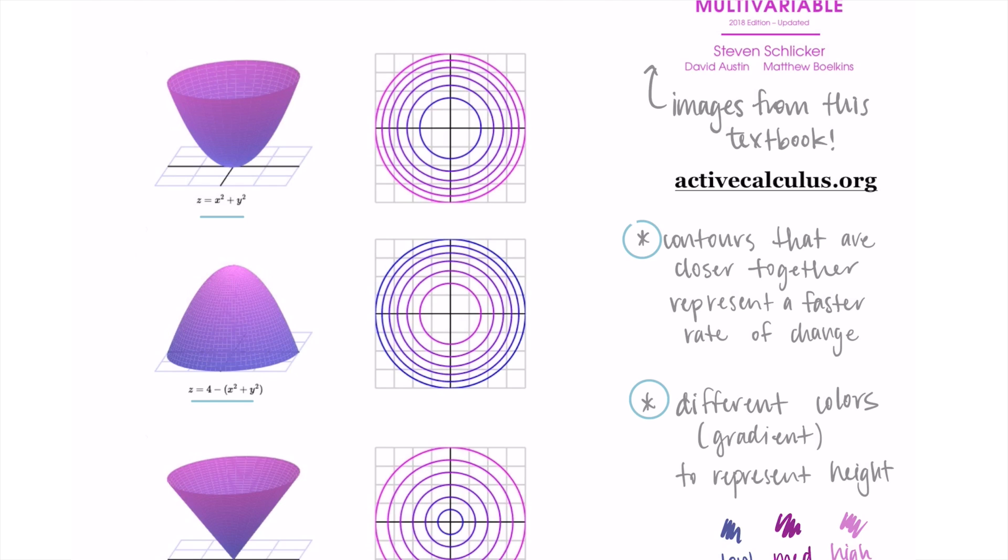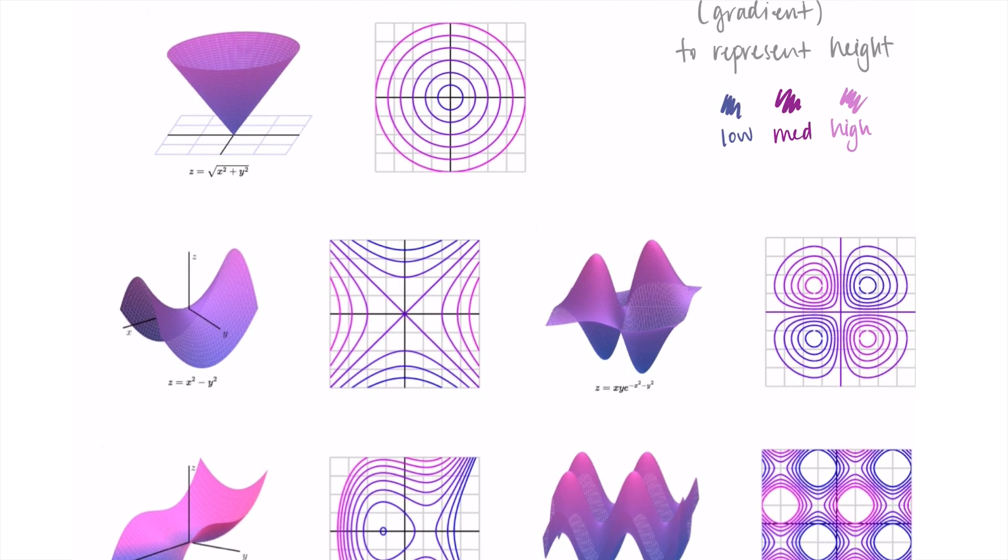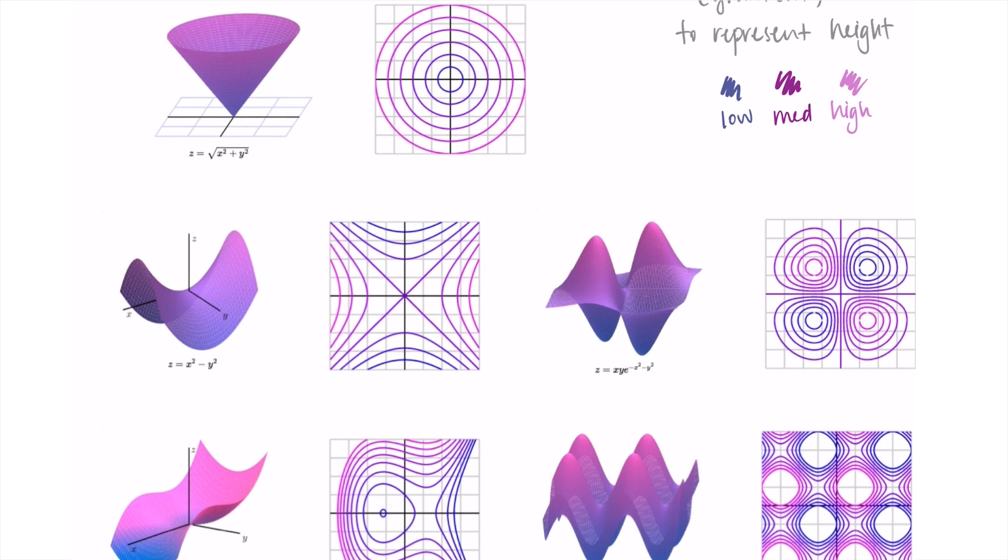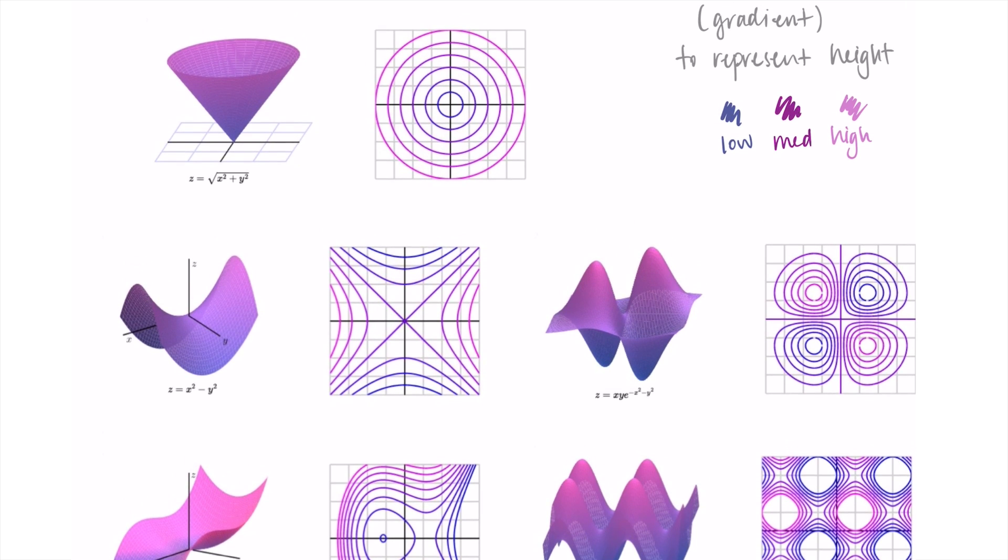For the rest of this, I just want to point out some different types of shapes you might see. There's lots of cool stuff we can do in three dimensions. This first one is a cone. We just add the square root on the x squared plus y squared. This means that the rate of change is suddenly constant. As we go out, all of these level curves are the same distance apart. The rate of change is constant, which is pretty cool.